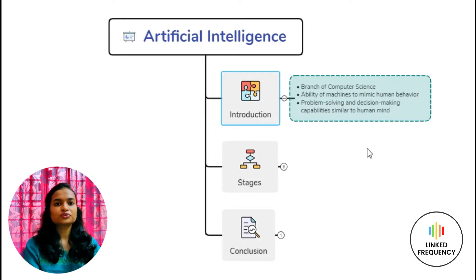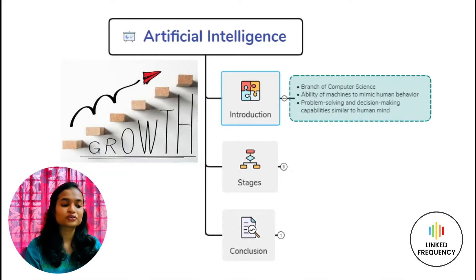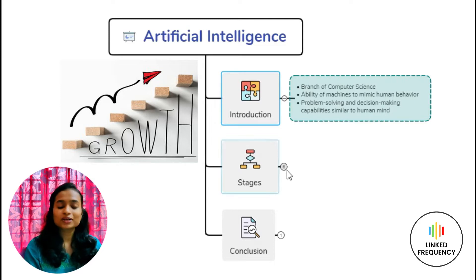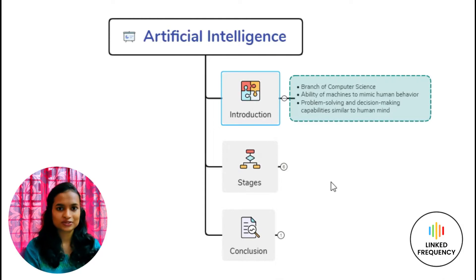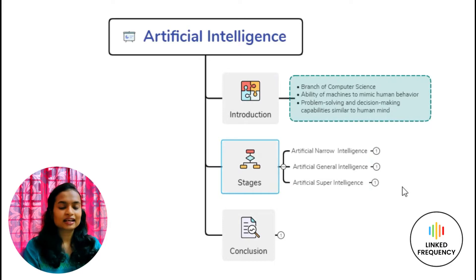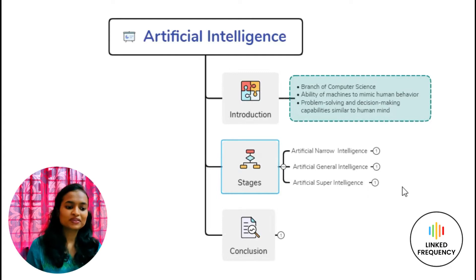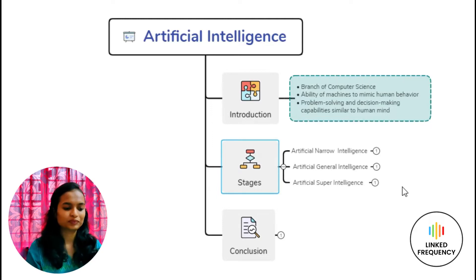Moving on to the different stages of Artificial Intelligence. Nowadays many companies and industries are trying to take up Artificial Intelligence in their domain so that they can have very good growth opportunities. So it becomes very important for everyone to know the different stages of Artificial Intelligence. There are three types: Artificial Narrow Intelligence, also known as ANI, and lastly Artificial Super Intelligence, that is ASI. We will go in depth on all three stages now.